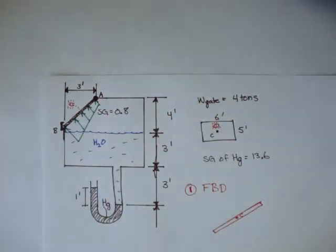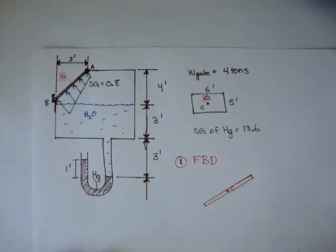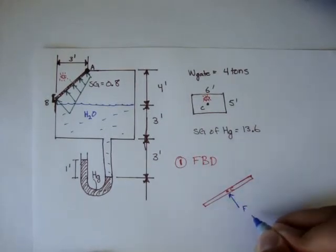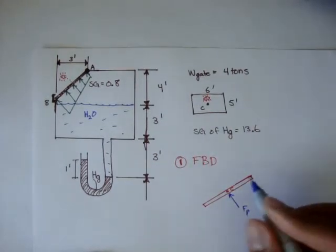So we don't know what the pressure is at the very top of the gate. But, anyway, we can say, okay, well, this pressure distribution can be written as a force that results from the pressure at the centroid of the gate.